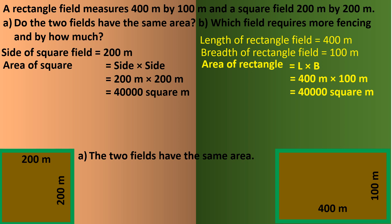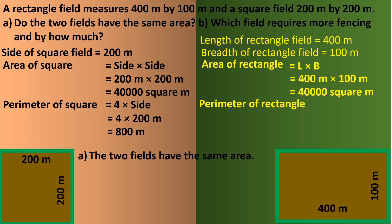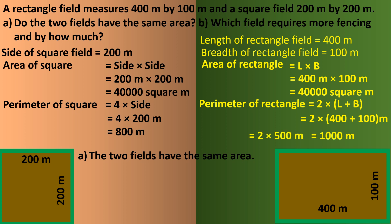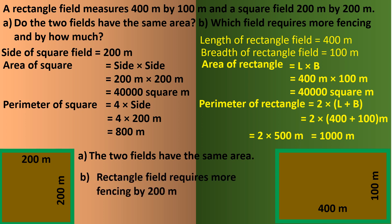Next: which field requires more fencing? Fencing refers to the border of the figures, which means we are talking about perimeter. Perimeter of a square equals 4 into side, so 4 multiplied by 200 meters equals 800 meters. Perimeter of rectangle equals 2 multiplied by (length plus breadth), so 2 multiplied by (400 plus 100) equals 2 multiplied by 500 equals 1000 meters. So the rectangle field requires more fencing by 1000 minus 800 equals 200 meters.